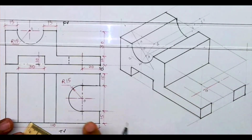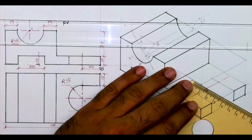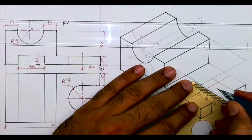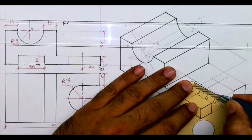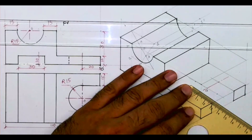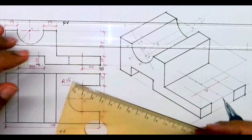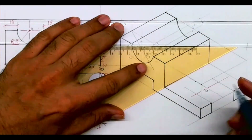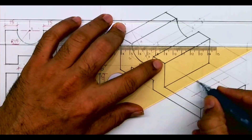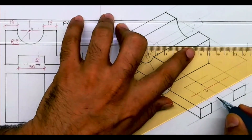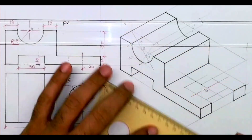This is point O. Again you have to mark 15, 15, 15, 15 on all four sides and draw the rhombus.